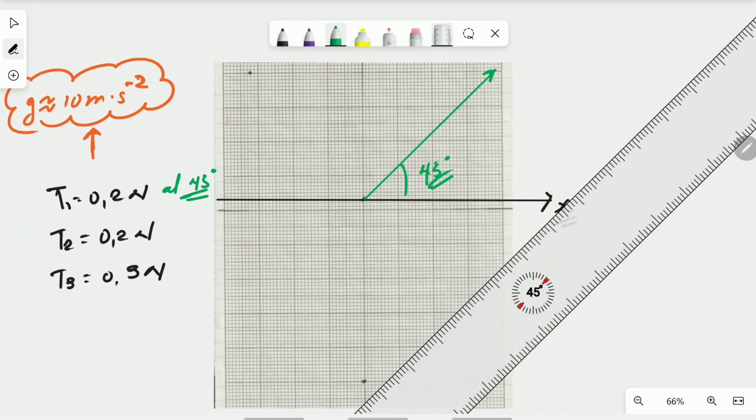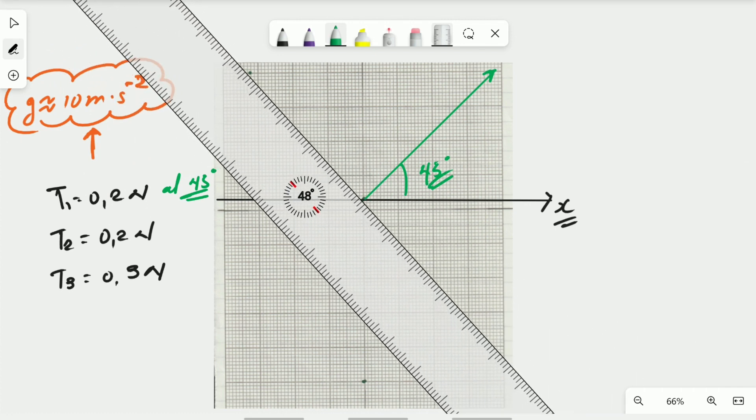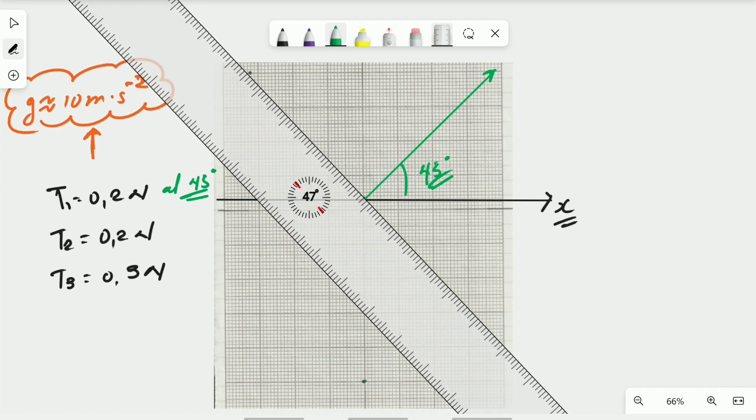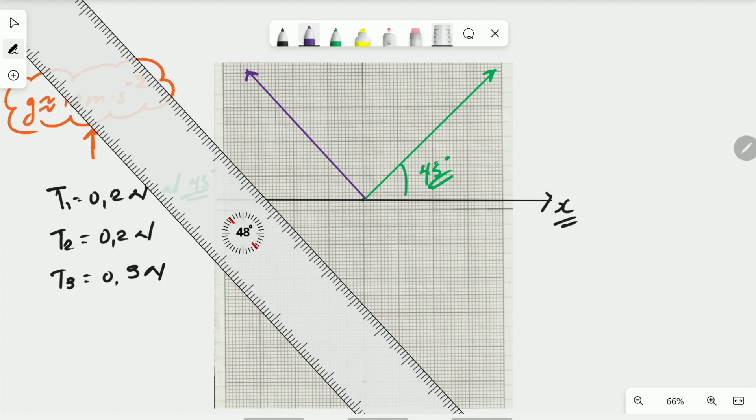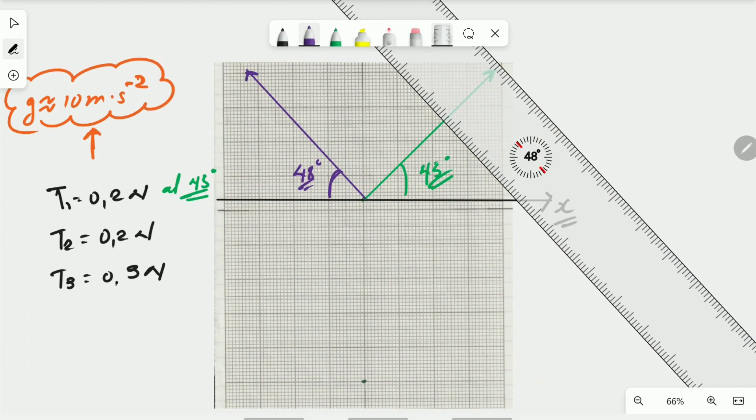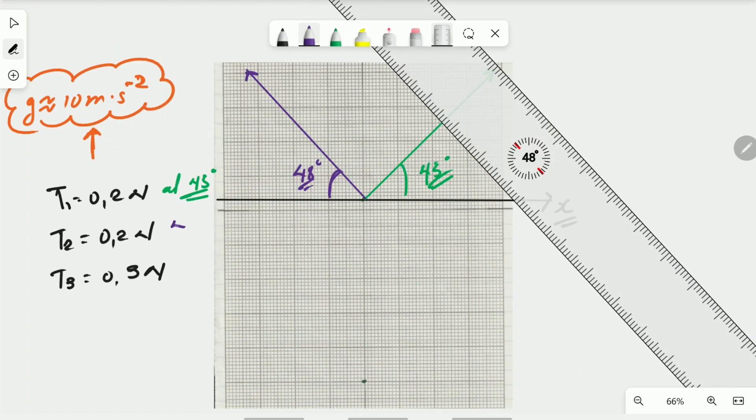So T1 will be 0.2 at 45 degrees, all of them to the positive X axis. Same if you go to T2 which is this one here, you can see it's 48 degrees. So if you draw this line here with your protractor you can get 48 degrees. This angle here is 48 degrees, at 48 degrees.